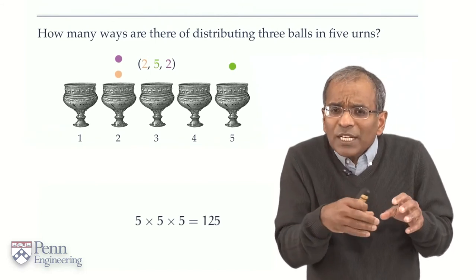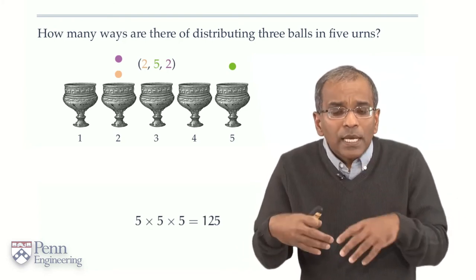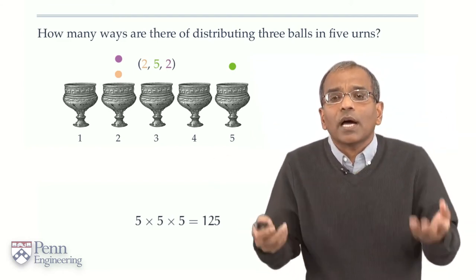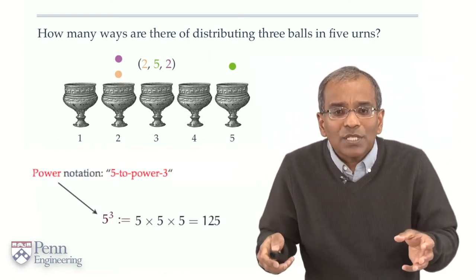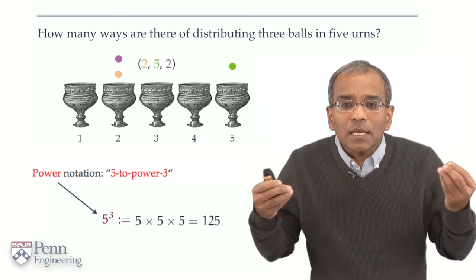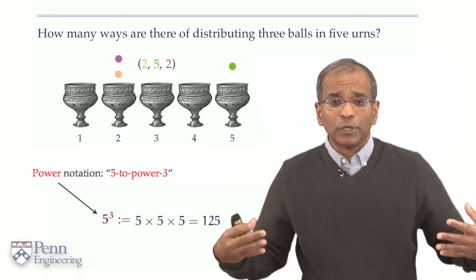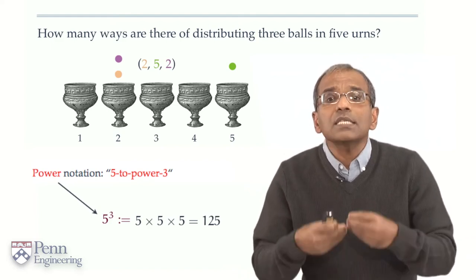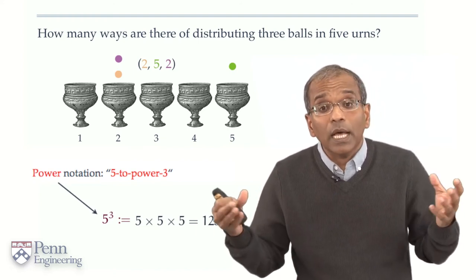Of course, this is 125. But we will ordinarily not worry about simplifying such numbers. The logic behind the calculation for our purposes is much more important than the final answer. So the idea here is that the number of urns multiplies three times. Of course, from very early on in school, we have a short compact notation for this. We call it 5 to the power 3, or 5 cubed. So, in fine, there are 5 to the power 3 distinct ways in which 3 distinguishable balls can be distributed into 5 distinguishable urns.